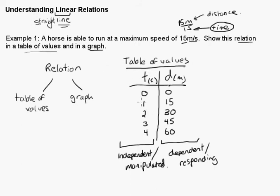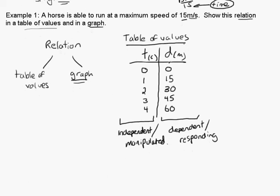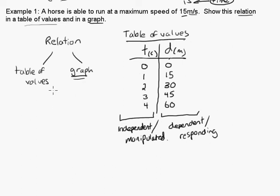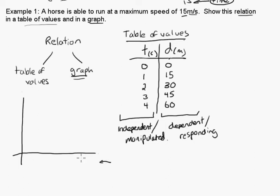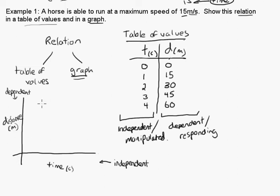Another way to express this relationship is as a graph. When drawing the graph, we have the x-axis (horizontal) and the y-axis (vertical). For this word problem, the x-axis will hold the independent variable — time in seconds — and the y-axis will hold the dependent variable — distance in meters. We can title the graph 'Distance versus Time Graph.'